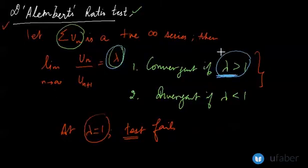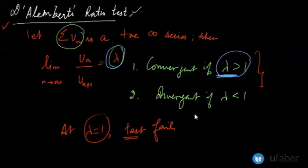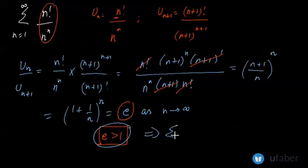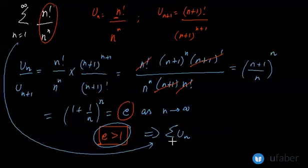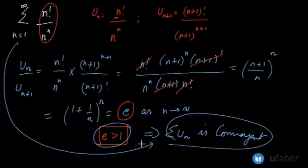And in this question that we have, the limit is coming out to be greater than 1. This implies that the given series, that is sigma u_n, the series is convergent. This is how you find out whether the series is convergent or not.